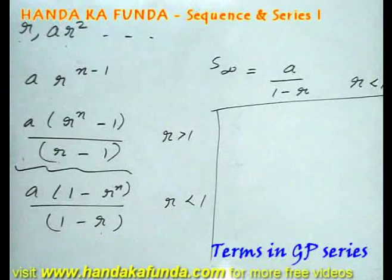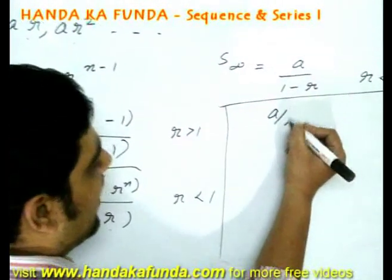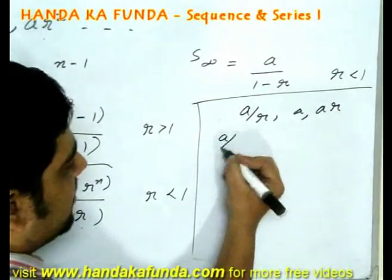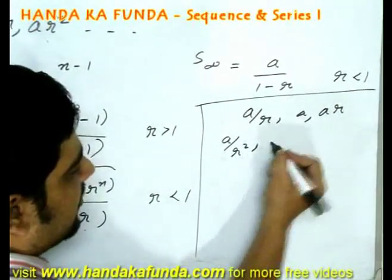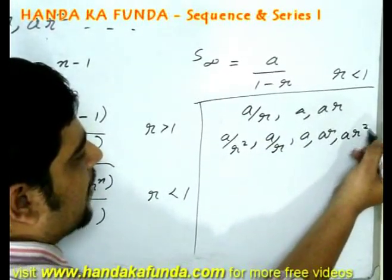Very similar to AP, if you have to assume three terms in a GP, they should be a by r, a, and ar. Five terms in a GP should be a by r square, a by r, a, ar, and ar square.